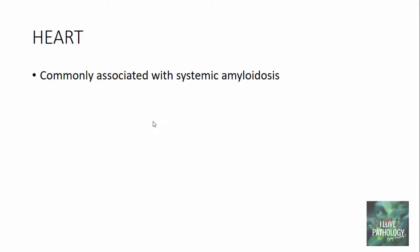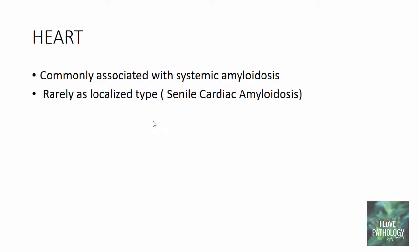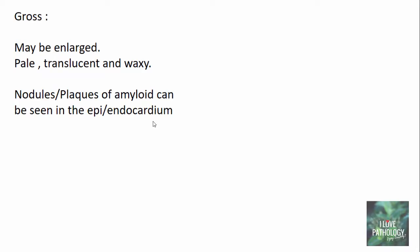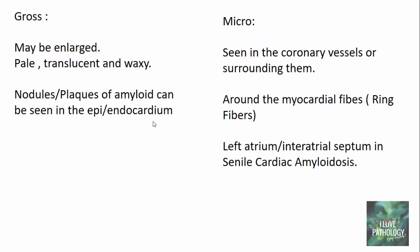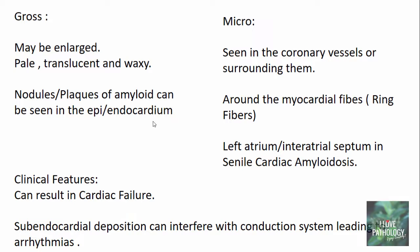Amyloidosis of the heart is commonly associated with systemic amyloidosis, and rarely as a localized type such as senile cardiac amyloidosis. Grossly the heart may be enlarged with a pale, translucent, waxy cut surface. Amyloid can be seen as nodules or plaques in the epicardium or endocardium. Microscopically it is found in and around coronary vessels, and around myocardial fibers — referred to as ring fibers. In senile cardiac amyloidosis, deposits are seen in the left atrium or inter-atrial septum. Clinically, cardiac amyloidosis can result in cardiac failure, and if deposits are in the sub-endocardial region, they can interfere with the conducting system and lead to arrhythmias.